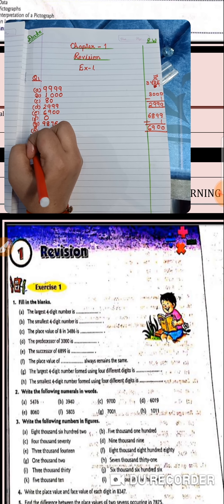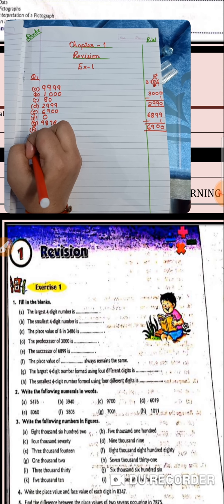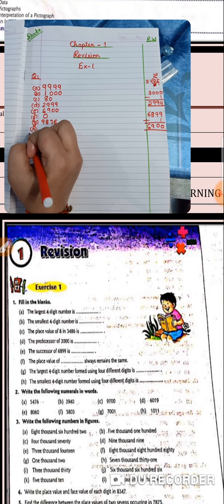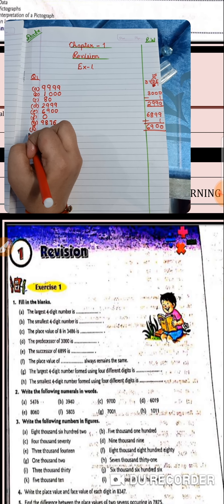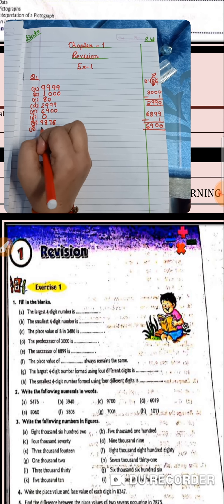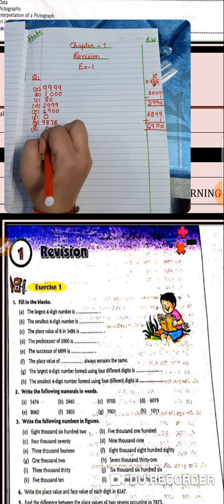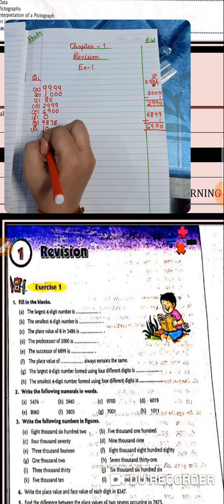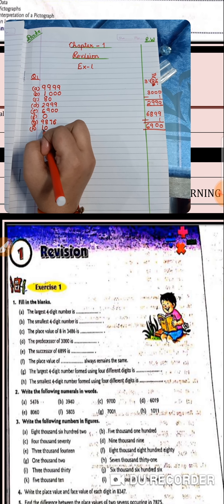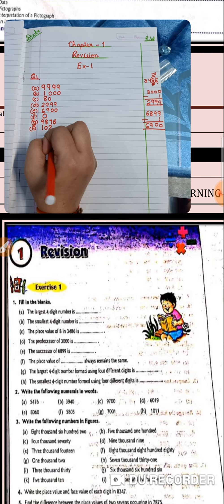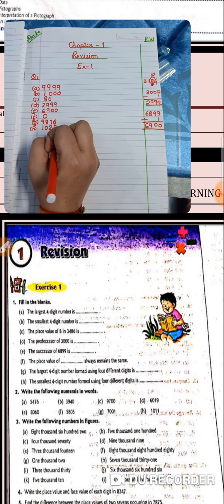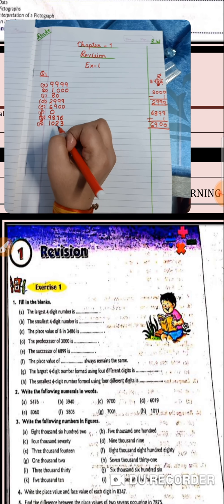For the smallest 4-digit number using 4 different digits: the smallest digit is 0, and before 0 you write 1. So we have included 0 and 1. After 1, 2 will come, and after 2, 3. So your answer will be 1023.